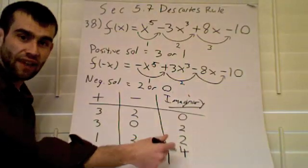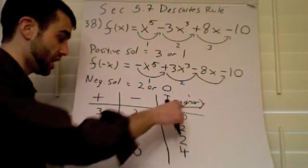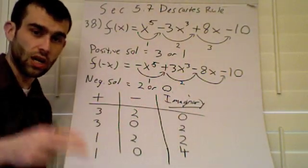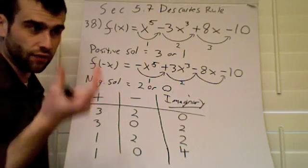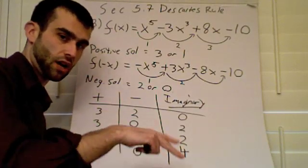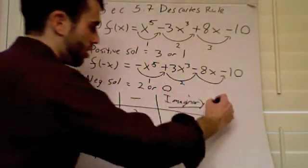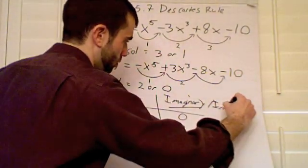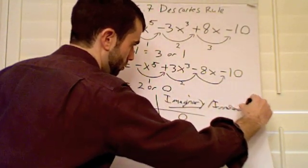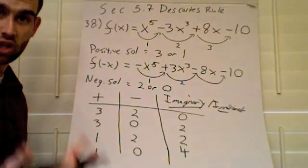Now, you notice that over here, these irrational and these imaginaries, they have to be even numbers. You can't have a one or a three because, remember, we had that theorem that said that if you have one of the imaginary irrational pairs, you have to have the other imaginary, irrationals as well.